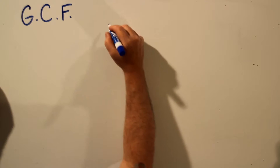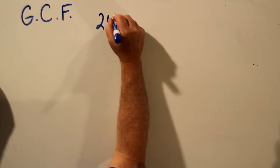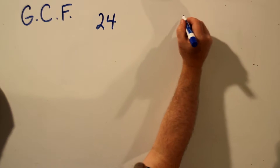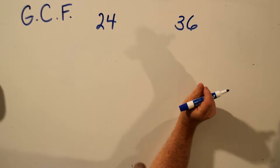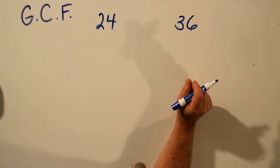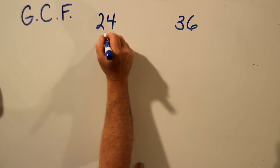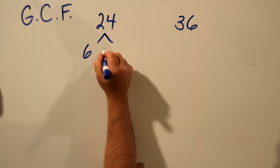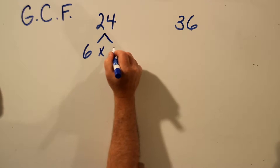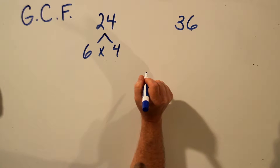We'll start with an example. Let's find the greatest common factor of 24 and 36. The first step is to find the prime factors for each number using a factor tree. So for 24, we break it into two factors. We can use 6 times 4, or 12 times 2 — it doesn't matter. We're going to have the same prime factors at the end.